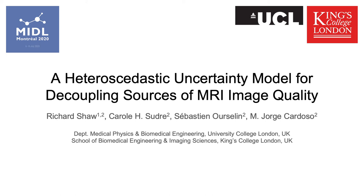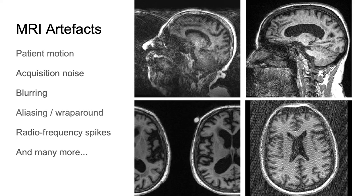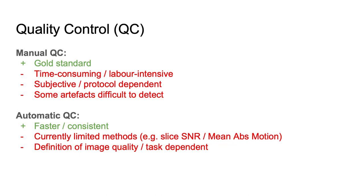We will be presenting our work on an uncertainty model for decoupling sources of MRI image quality. Artifacts in MRI can cause image quality to degrade and affect downstream analysis. Quality control is required to ensure that data is acceptable for particular tasks.